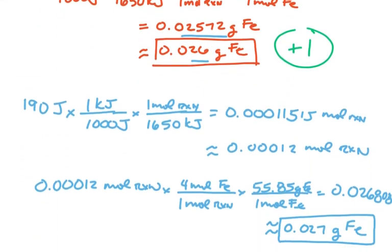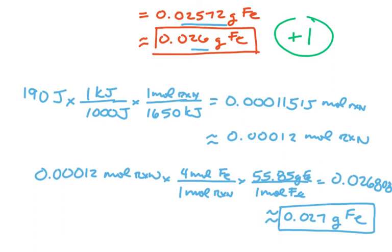If you do this in two steps, the numbers change slightly. Starting with 190 joules and converting to moles of reaction gives 0.0011515 moles. With two significant figures, this rounds to 0.00012 moles of reaction.